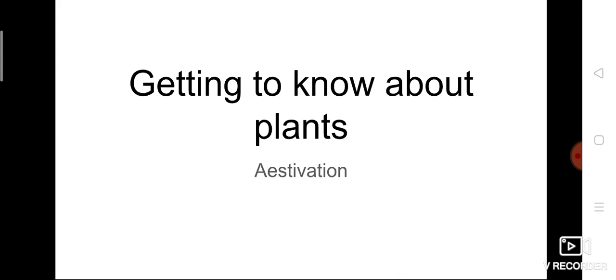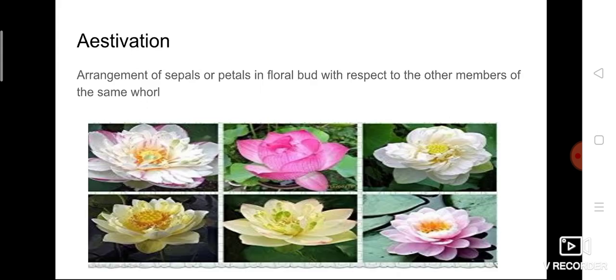Today we are going to discuss estivation. Looking at pictures of different flowers, you can see they vary in number of petals, number of sepals, colors, and the arrangement of sepals and petals. In estivation we talk about how petals are arranged — whether one is present after another, overlapping the other, or joined together.